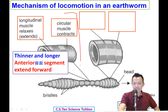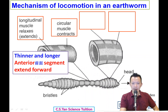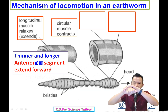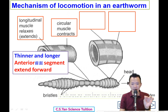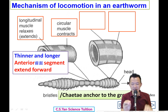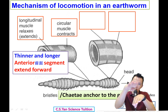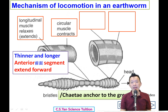Now we move to the second stage. After the body has extended thinner and longer and moved forward, the setae — the small hair-like structures — anchor or grip onto the ground.